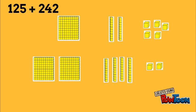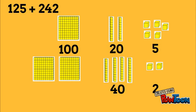Now mentally we can see each of these as numbers. So we can see 5, 20, and 100. So that makes 125. We have 2, 40, and 200. And that's what gives us the 242.